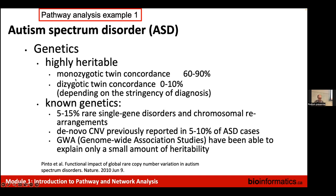I'm going to give you some success stories of pathway and network analysis from our collaborative research. The first example is work we did with Steve Scherer's lab at the Hospital for Sick Children, which studies autism spectrum disorder. They've studied the genetics of this disorder — ASD is a spectrum of phenotypes that includes trouble with social situations all the way to severe developmental delays and intellectual disability, and it's known to have a genetic component.